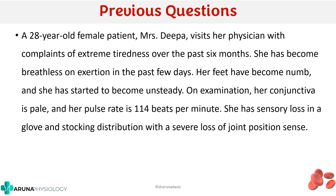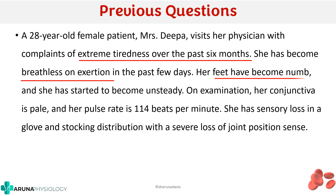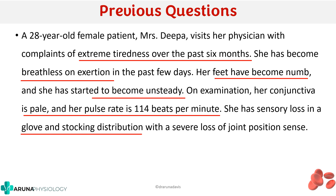A 28-year-old female patient visited a physician with complaints of extreme tiredness over the past 6 months. She has become breathless on exertion in the past few days. Her feet have become numb and she has started to become unsteady. On examination, her conjunctiva is pale and pulse rate is 114 beats per minute. She has a sensory loss in a glove and stocking distribution with severe loss of joint position sense.